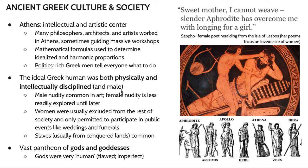Another aspect of this society was this notion of perfection, harmony, and idealization. Oftentimes you'll see mathematical formulas and ratios that are used to determine things that are perfect and just. The ideal Greek human was both physically and intellectually disciplined and male. Women weren't really considered people, and oftentimes you had people like Sappho that would just go to their own island and write about girls all day.